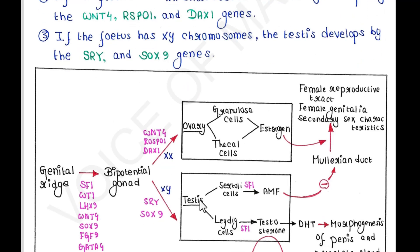If the fetus has XY chromosomes, the testis is developed by the SRY and SOX9 genes.